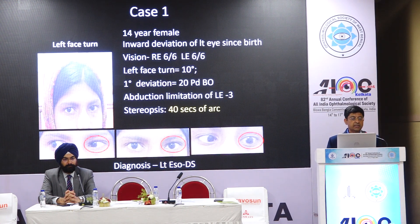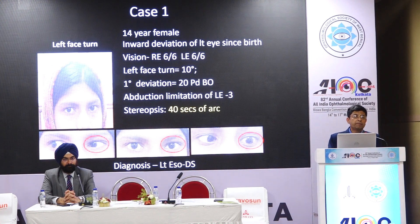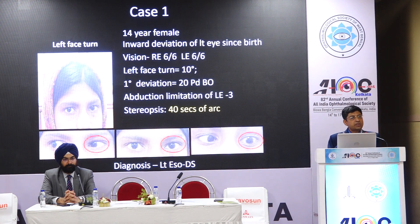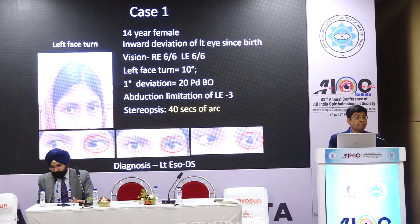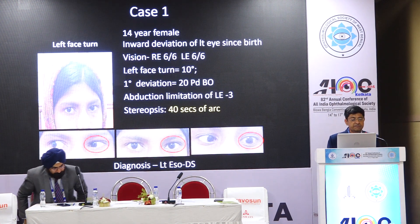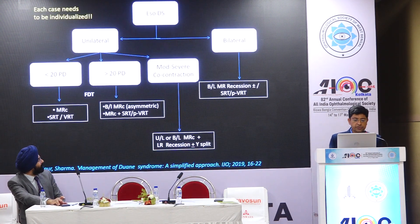This was a young girl with left eye esotropic Duane's and good stereopsis — something we see in Duane's because the angle of deviation is moderate. The patient is able to find a head posture that permits binocularity, but when they look straight the esotropia manifests, and the head posture is often a little more than the primary gaze deviation. This is a classic case of typical esoDuane's.